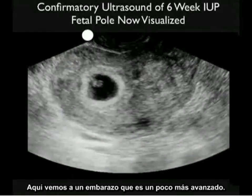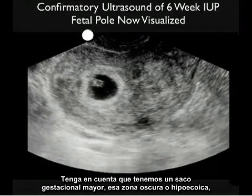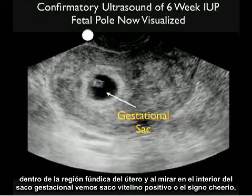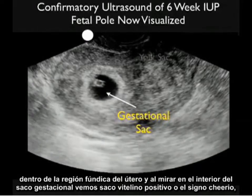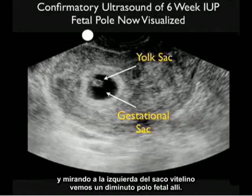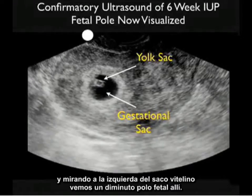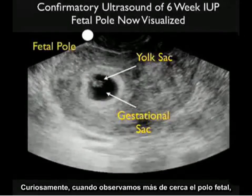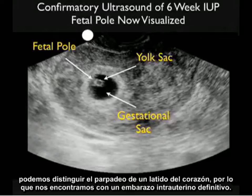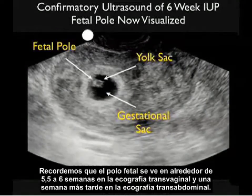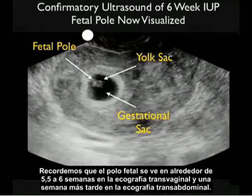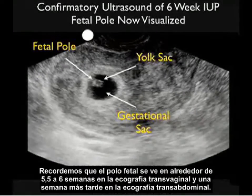Here we see a pregnancy that is a bit further advanced. Note the larger gestational sac — the darker hypoechoic area within the fundal region of the uterus. Inside the gestational sac we see the positive yolk sac or cheerio sign, and just to the left of the yolk sac we see a tiny fetal pole. When zoomed in on the fetal pole, we can make out the flicker of a heartbeat — a definitive intrauterine pregnancy. The fetal pole is seen at about 5.5 to 6 weeks on transvaginal sonography and about a week later on transabdominal sonography.